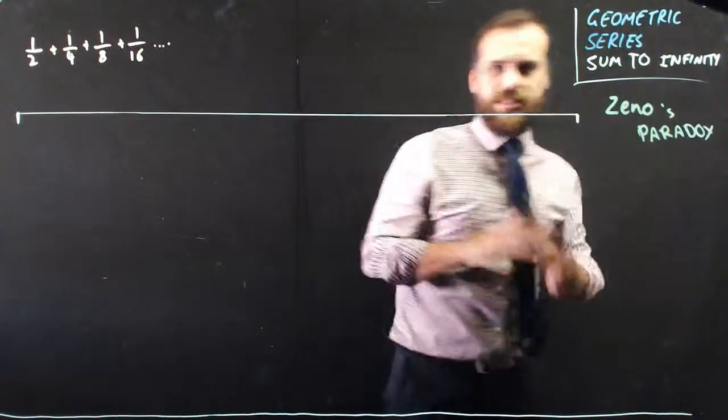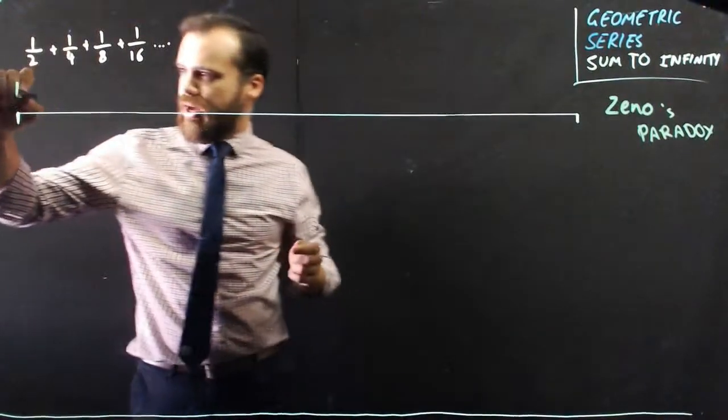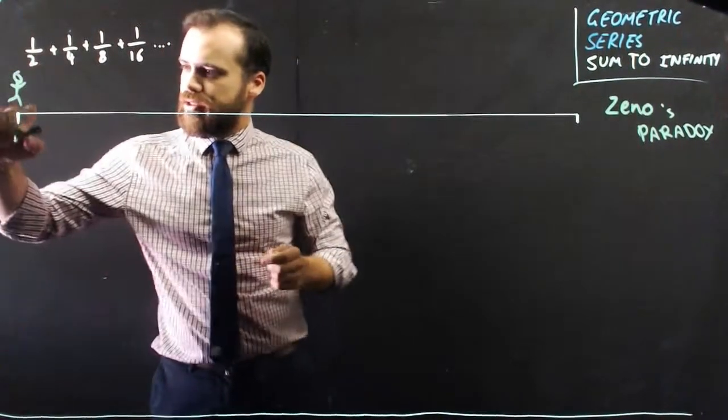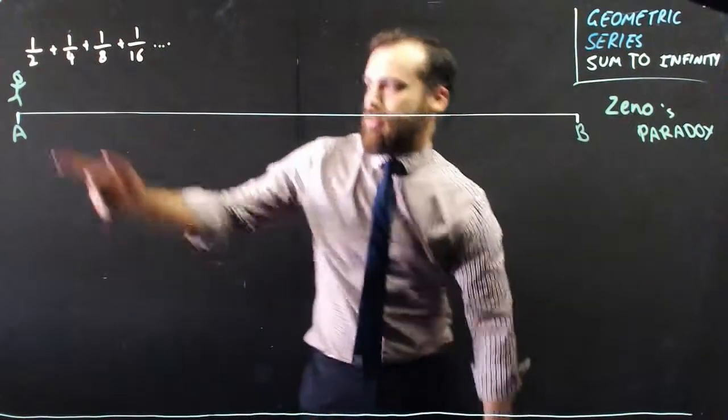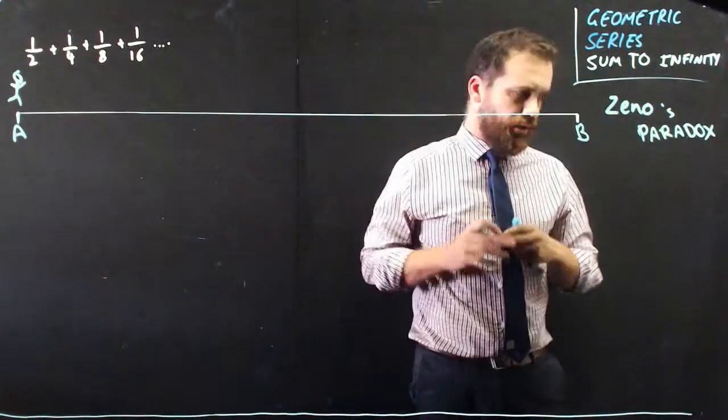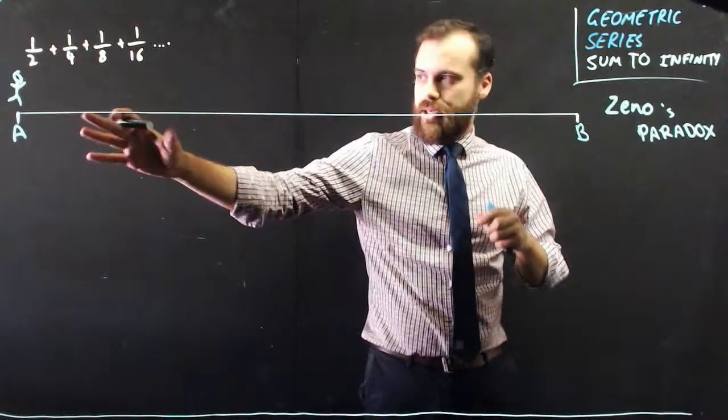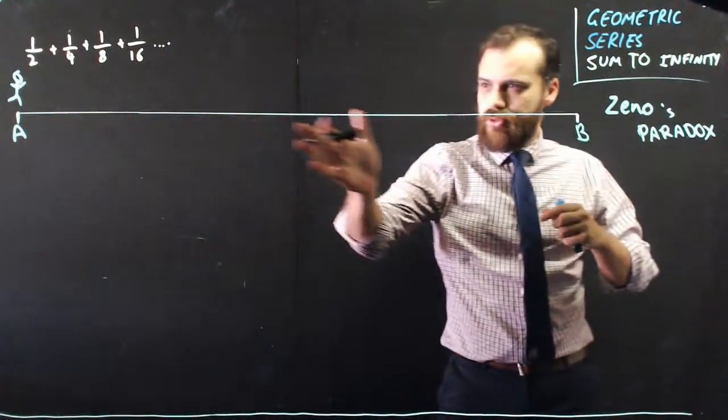And so Zeno's Paradox went something like this. A runner, here's my runner, starts at point A, goes to point B. Now to get from point A to point B, Zeno, or our runner here, has to pass through all of this section here.